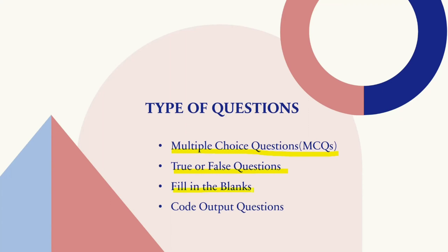Fill in the blanks questions give you a statement with a blank that you need to complete — these may test your knowledge of syntax, data types, or concepts. Code output questions give you a piece of code and you determine the output it will produce, testing your understanding of programming logic, syntax, and data types. Code writing questions are open-ended, asking you to write code to solve a problem, possibly involving arrays, strings, or loops, and may require complete programs.